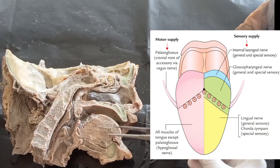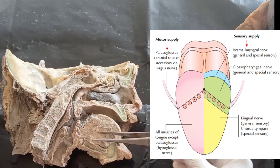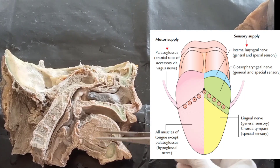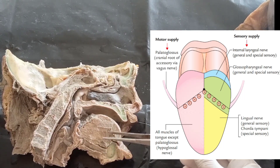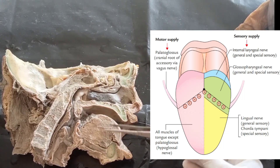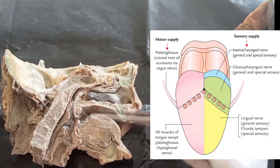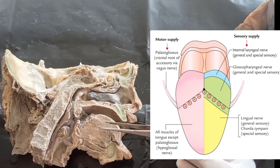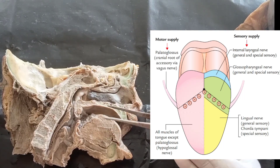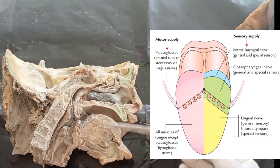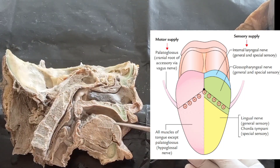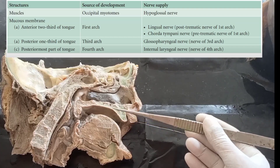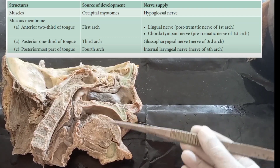The posterior one-third of the tongue is supplied by the glossopharyngeal nerve, which carries both general and special sensation. The postermost part is supplied by the internal laryngeal nerve, which is a branch of the vagus nerve.